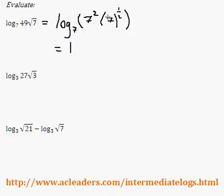Maybe I should have some square brackets here, but I hope you guys don't mind. So, log base 7, 7 squared times 7 to the half is just 7 to the 5/2.